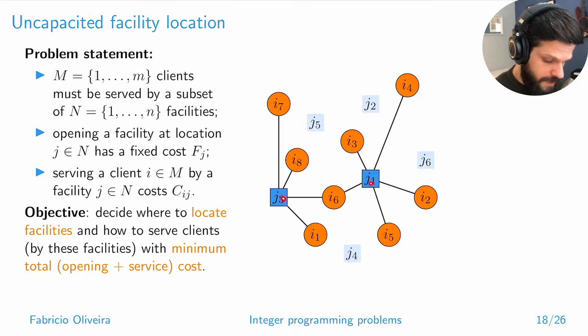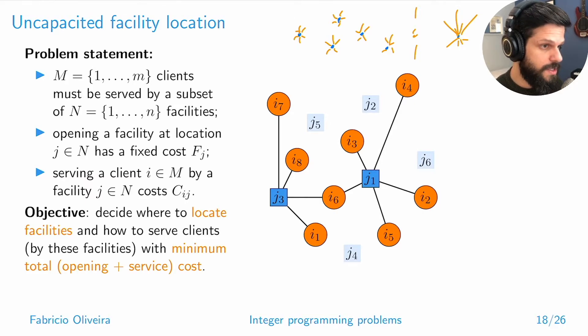The number of facilities is a decision variable. Depending on the balance between opening costs and service costs, you might have a capitalized network with several facilities scattered out, each doing local covering, or you can have fewer facilities with a much wider radius of service. What determines the balance between these situations is whether installing is cheaper or serving is cheaper. This is the underlying model in many supply chain design problems.